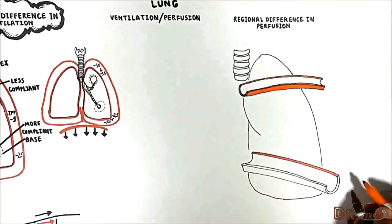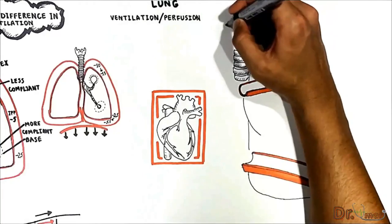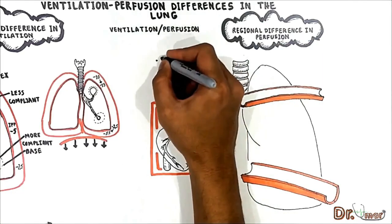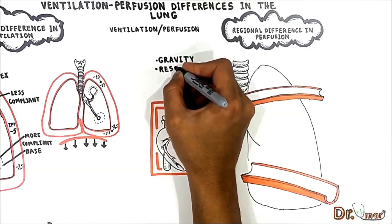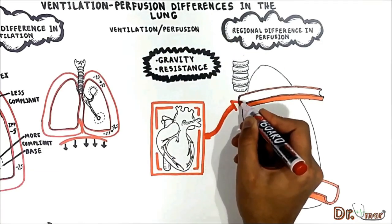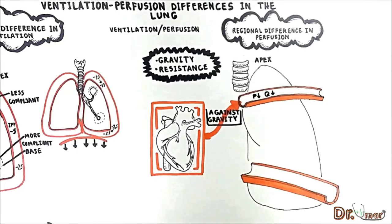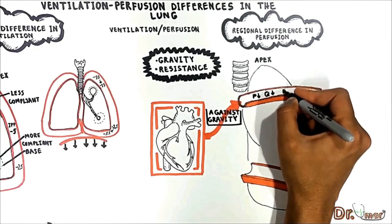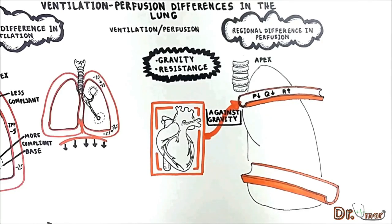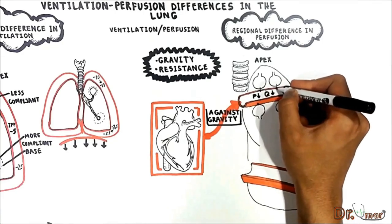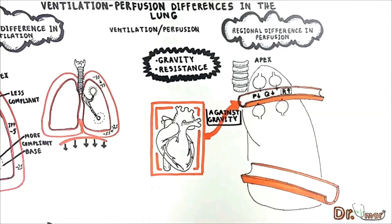There are not only regional differences in ventilation but also regional differences in perfusion — blood flow through the pulmonary circuit. These differences are due to the effects of gravity and resistance. When blood flows up toward the apex, gravity opposes it, so pressure and flow decrease. Additionally, blood flow to the apex is decreased because of increased vascular resistance: the alveoli have large size due to decreased intrapleural pressure, and blood vessels are compressed by alveolar air pressure on their outsides, so resistance increases and pressure and flow decrease further.